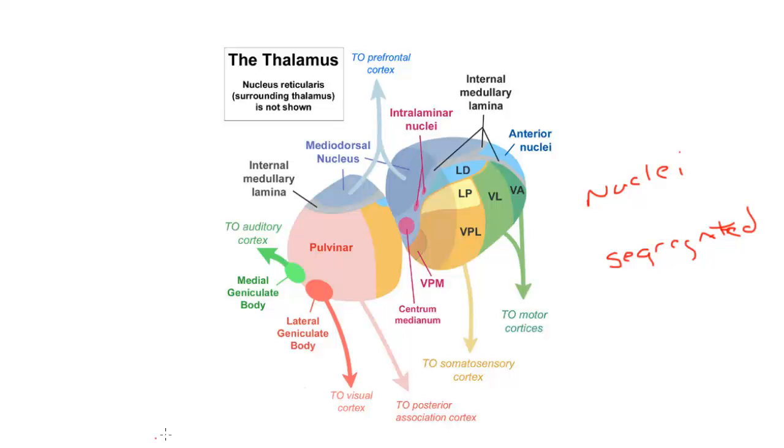One of the classic segregation of function ideas is right here. This is the somatic sensory thalamus. You'll notice there are two nuclei: VPL, the ventral-posterolateral, and VPM. They're both somatic sensory, yet VPL is for the body and VPM is for the face.